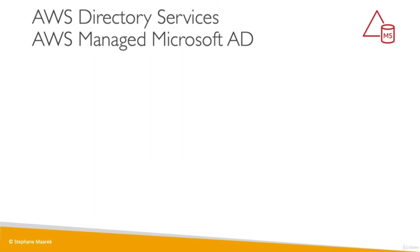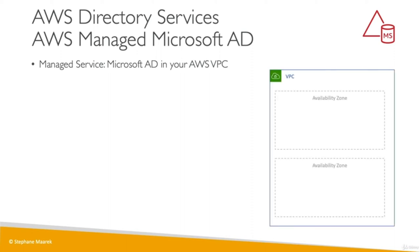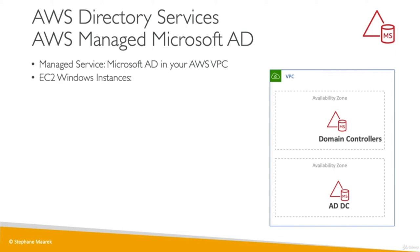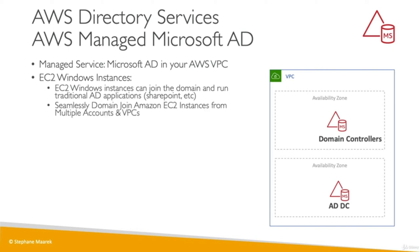With AWS Managed Microsoft AD, you're going to be deploying Microsoft Active Directory within your VPC. Here we have two AZs, and we'll have two AD Domain Controllers deployed in two different AZs for high availability. You'll be able to create EC2 Windows instances and deploy traditional applications on these instances — for example, SharePoint — or do something called Seamless Domain Join from your Amazon EC2 instances in multiple accounts and VPCs directly onto your domain controllers. This is a feature coming directly out of the Managed Microsoft AD.